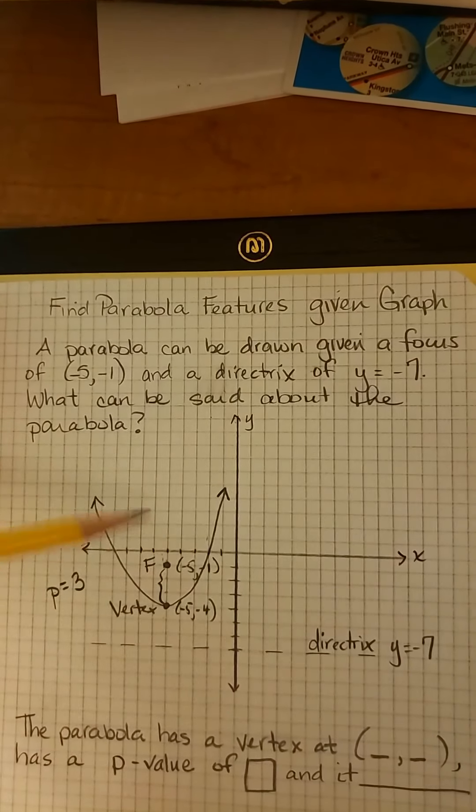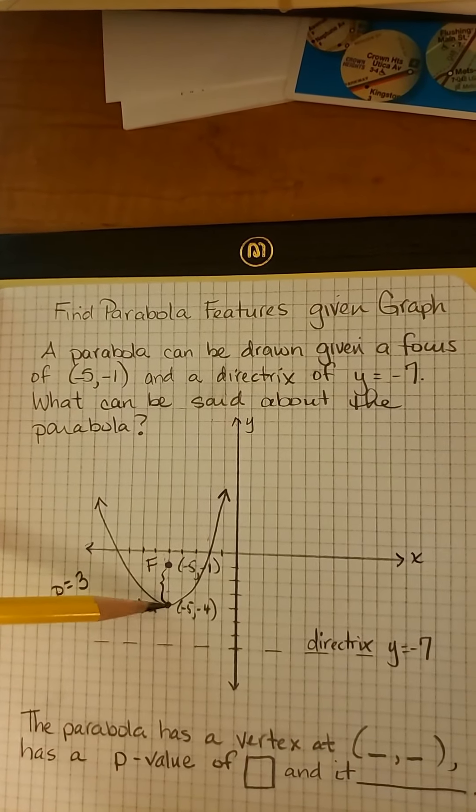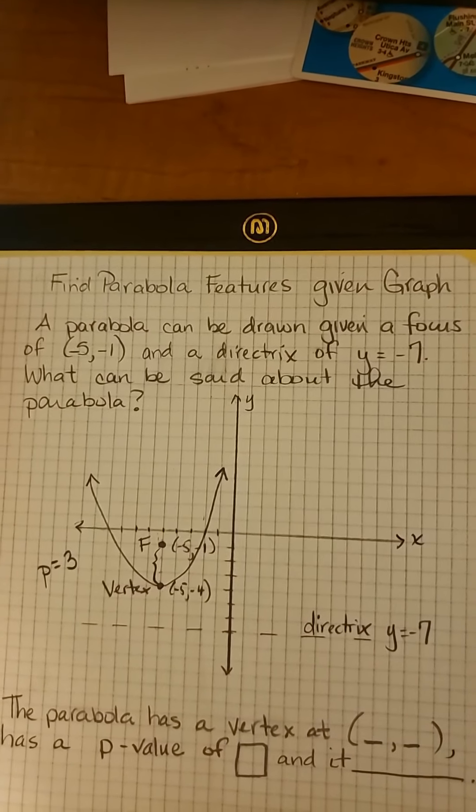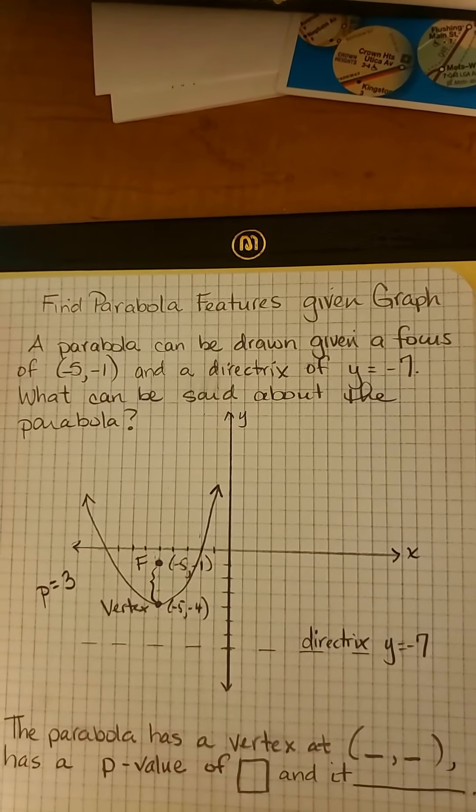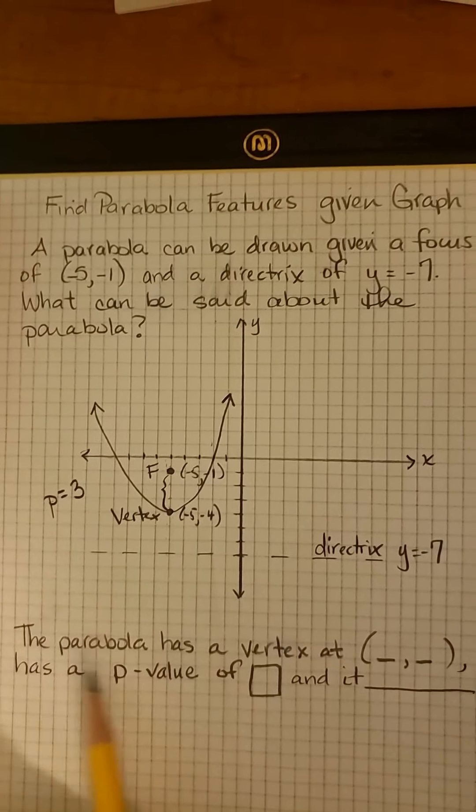If the parabola was facing downwards, p would be negative because we would have to go down to get to the focus. Okay, so I think that's all we need. Let's fill in the blanks.